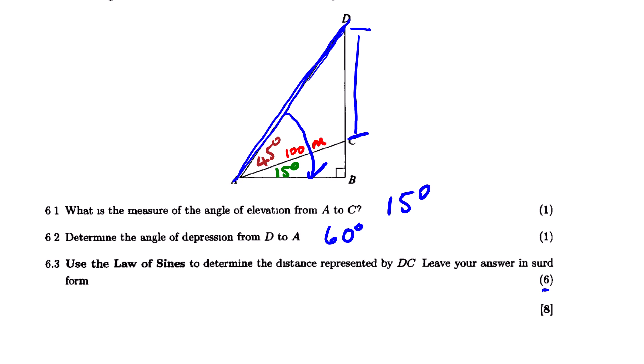But before we go to 6.3, let us look at the proper way on how to answer 6.2. As you can see the question is saying determine. So we need to say the angle of depression from D to A. So the actual angle will be 45 plus 15 degrees and then that will be 60 degrees. Don't just write 60 degrees. You must work it out. Now going back to 6.3.